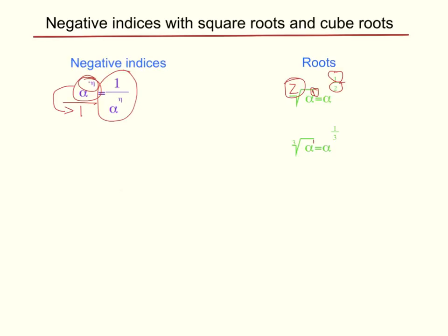Going back to the answer, the power of the answer is 1 over 3. The numerator of the power is the power of the pronumeral that's inside the root, and the denominator of the power is the power of the root itself. That is how we got the answer of a to the power of 1 over 3. Now let's solve some challenging questions.